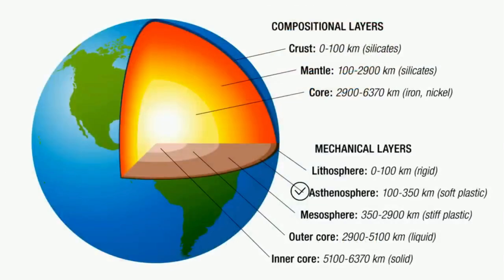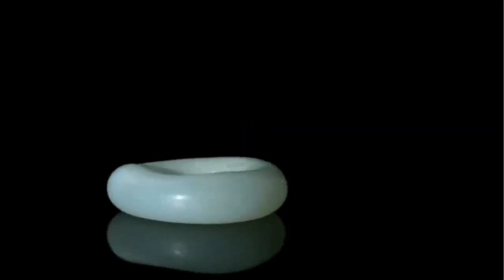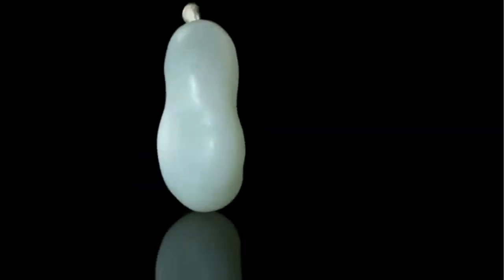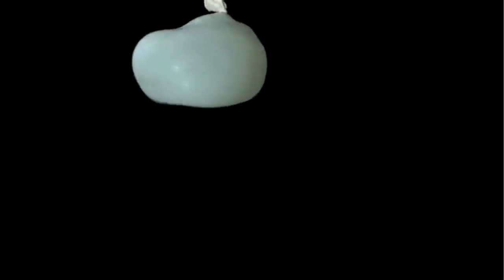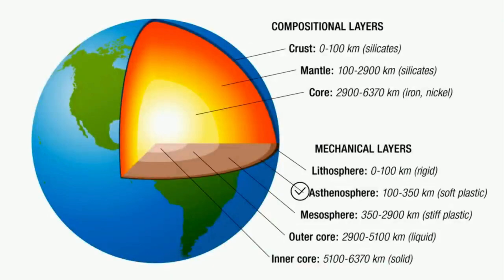The asthenosphere lies underneath and it's made of solid rock that moves very slowly. It's described as viscoelastic which means it can flow and also can be elastic. The asthenosphere is located below the lithosphere and the tectonic plates move on top of the asthenosphere.